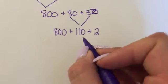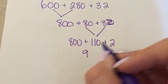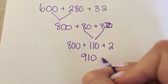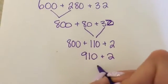Now I know that 800 plus 110 is going to be 910. Plus 2 will be 912.